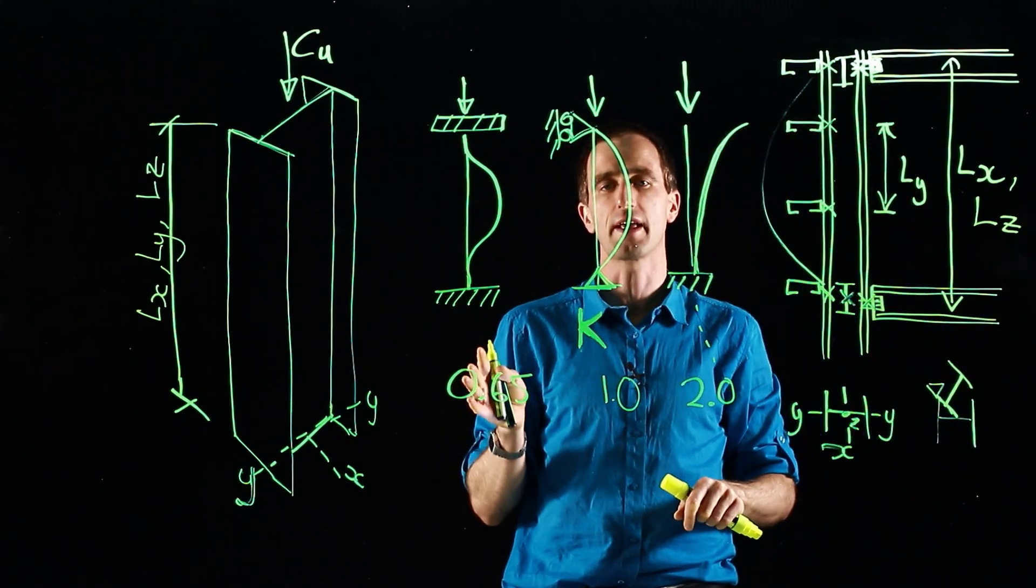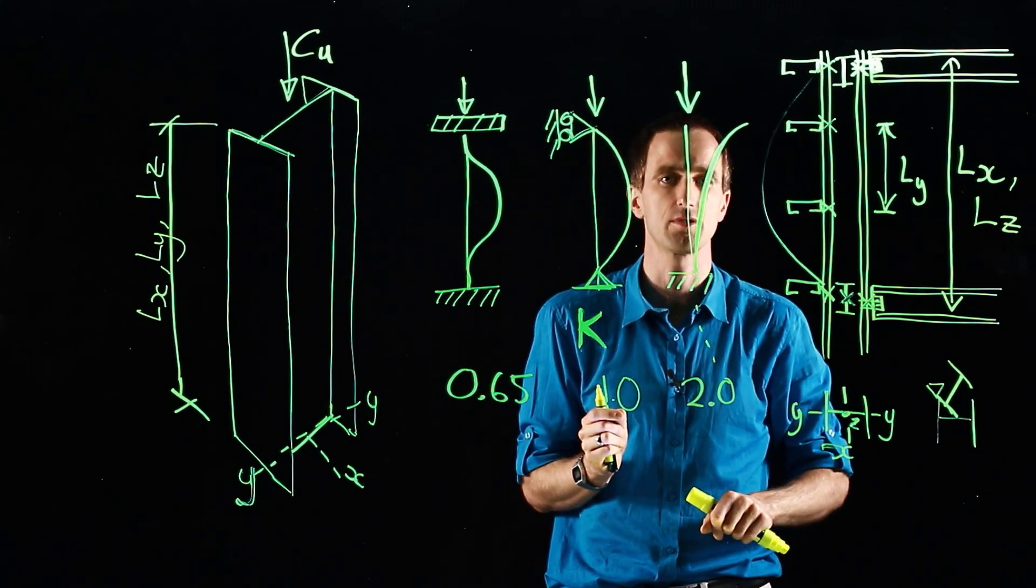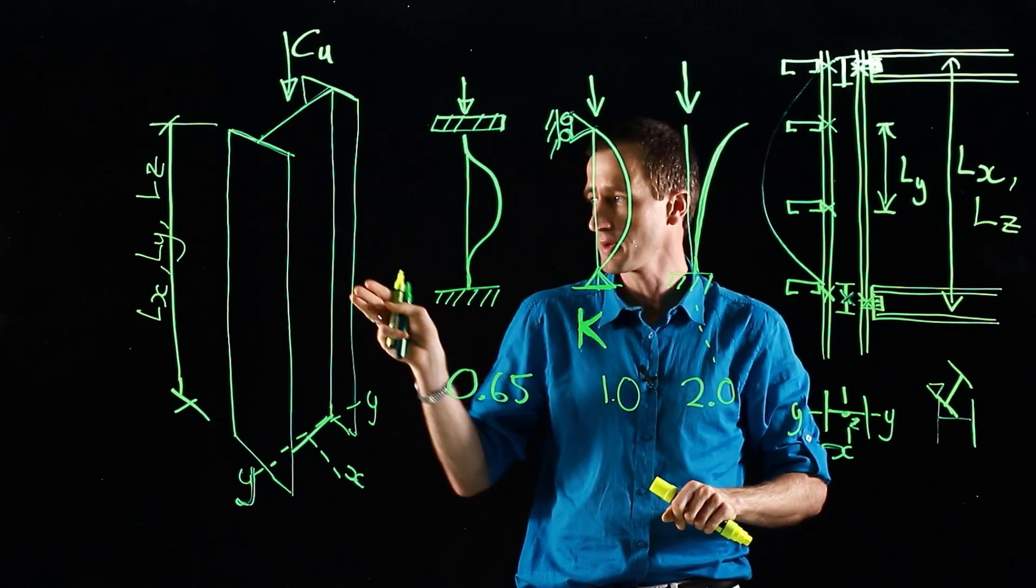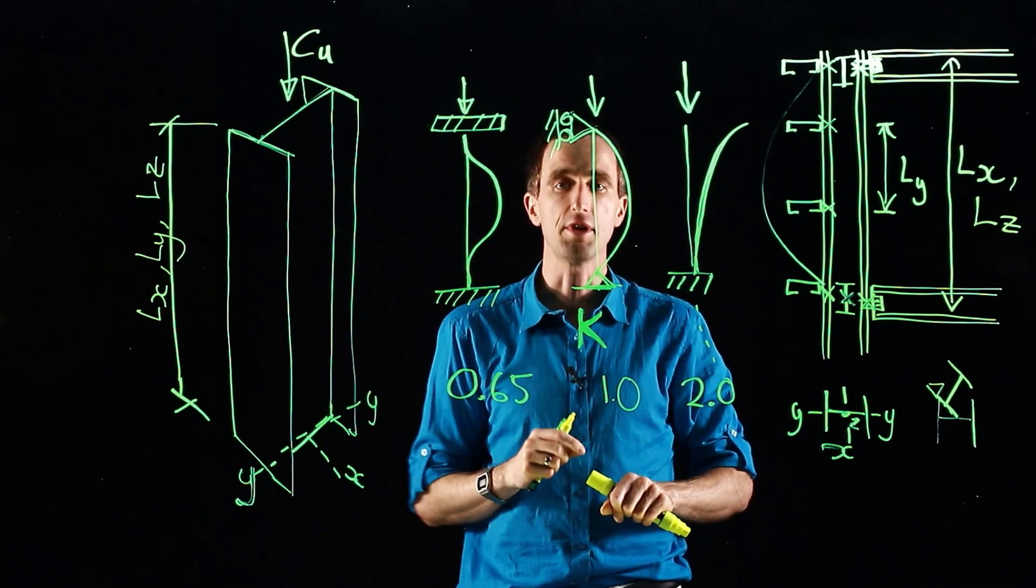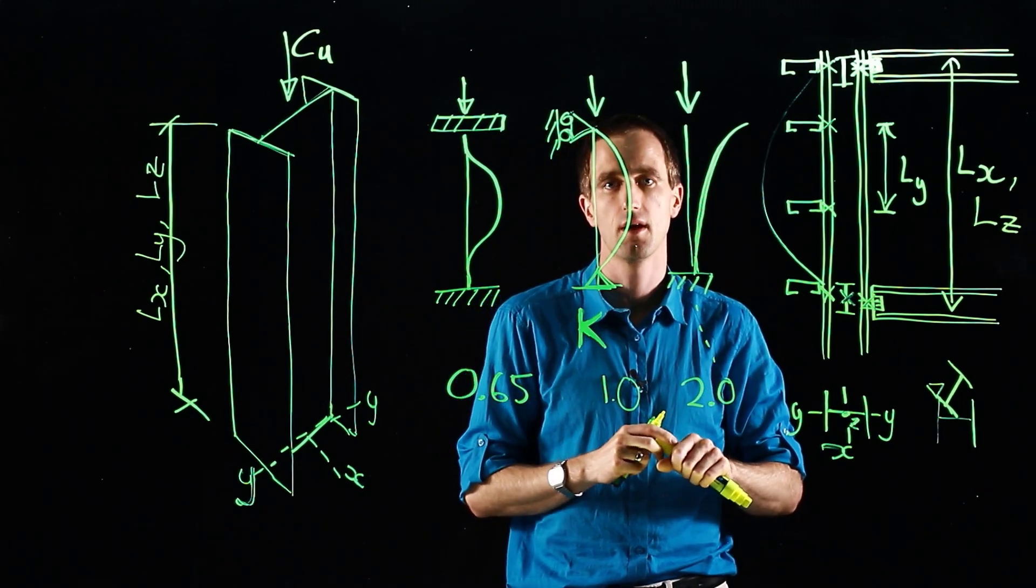So that gives an overview of effective lengths of columns. And just remember, you can have multiple effective lengths. And it does make your design a lot more complicated. And you can have different modes governing. Normally, we go straight to our weak axis. But the others could govern, depending on the effective lengths. Thank you.